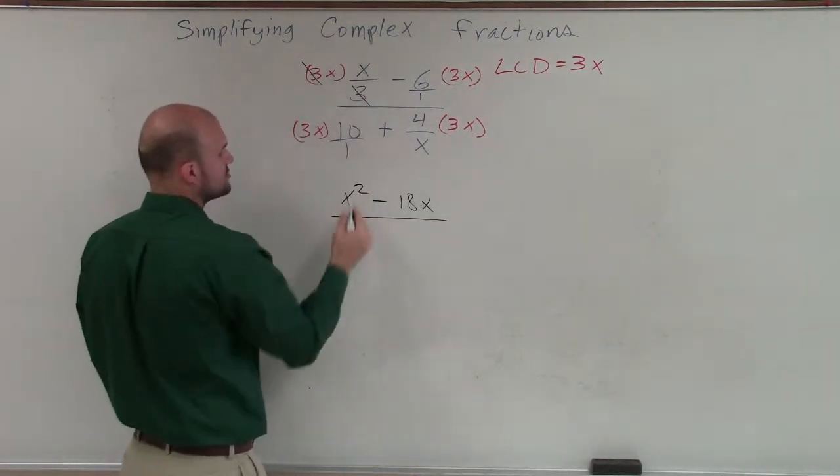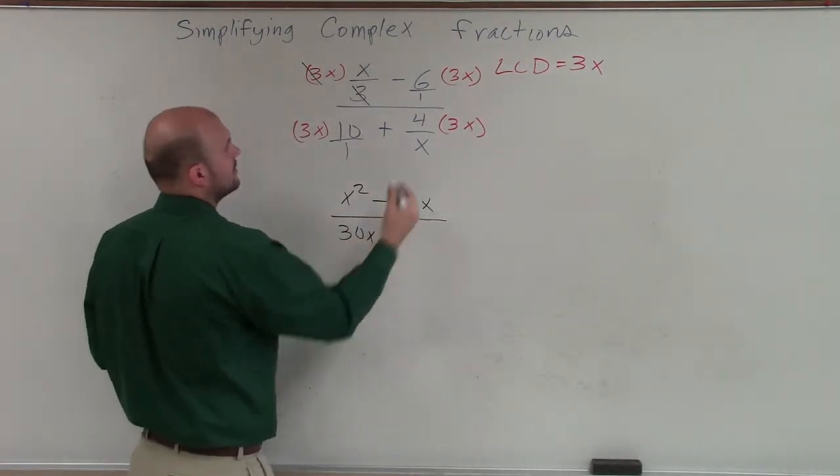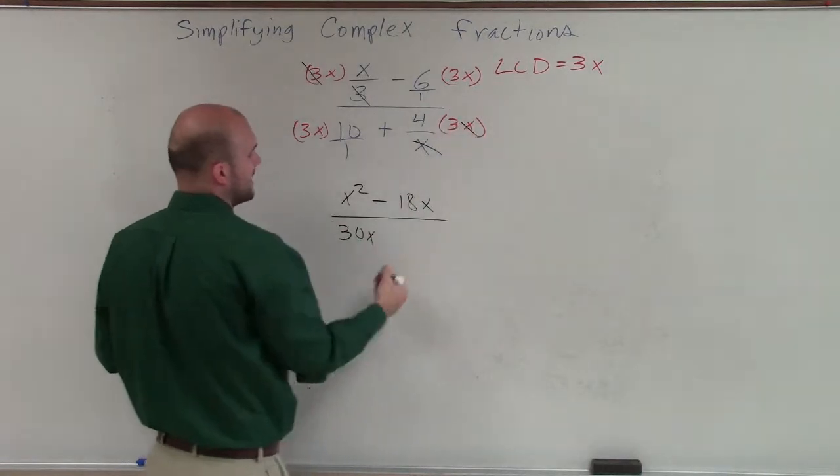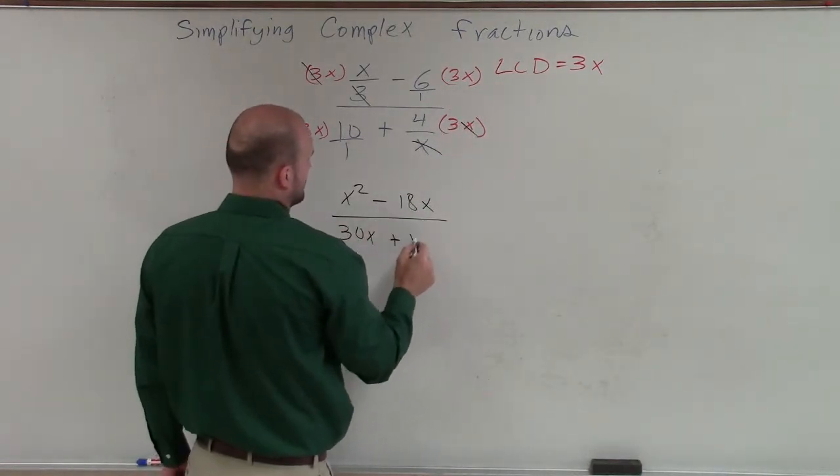All over, this will be 30x. And then over here, my x's will divide out, and I'll be left with plus 12.